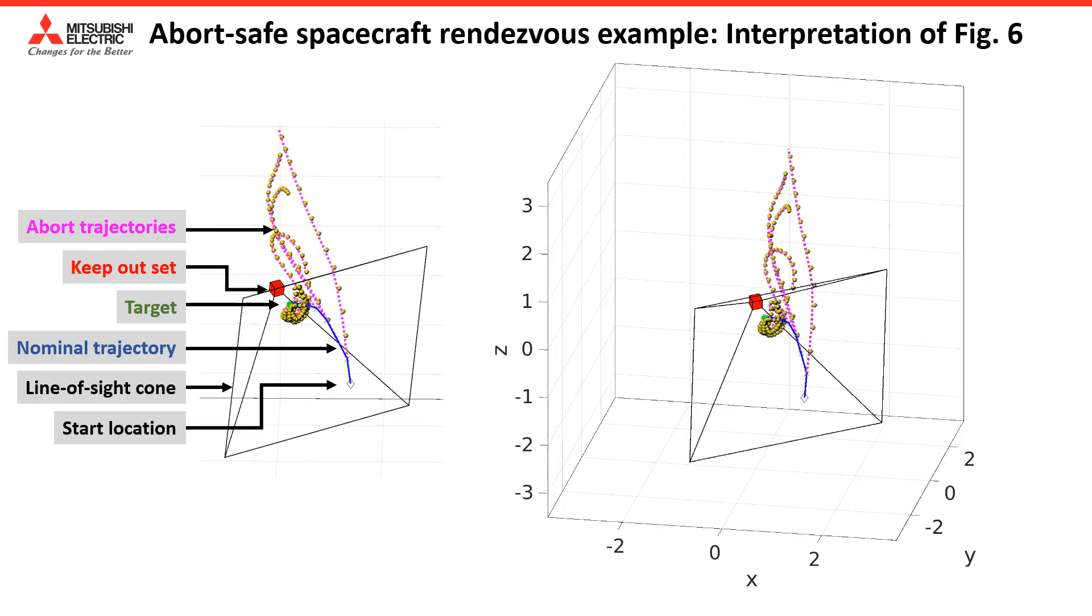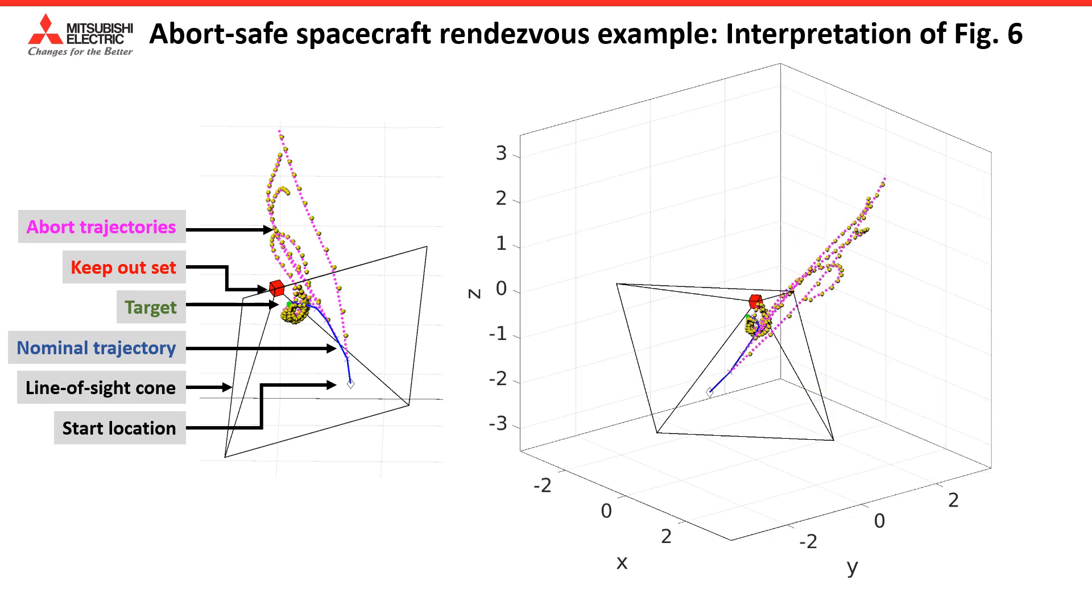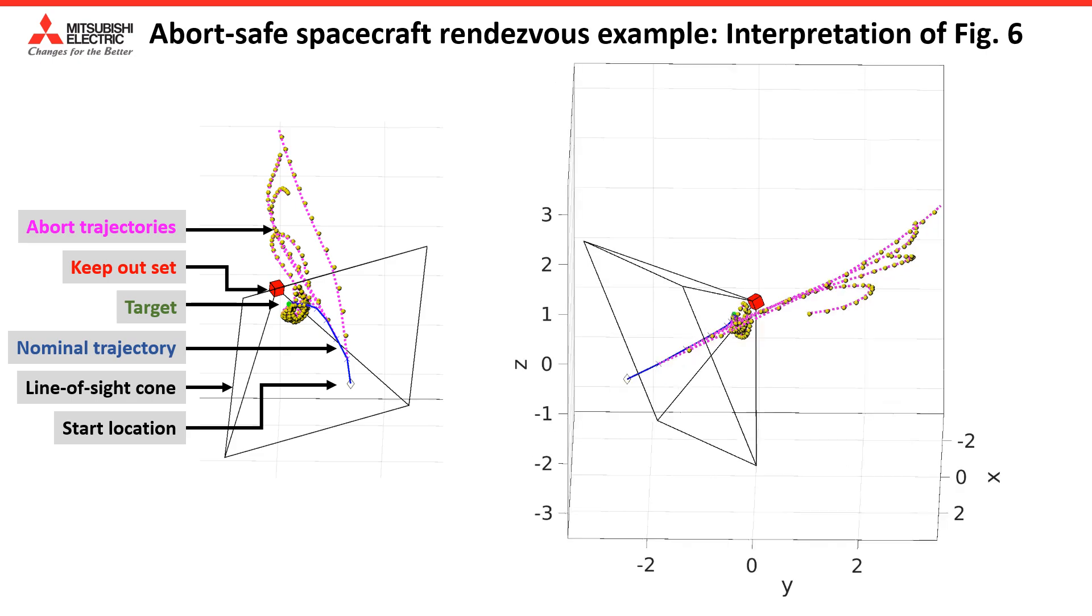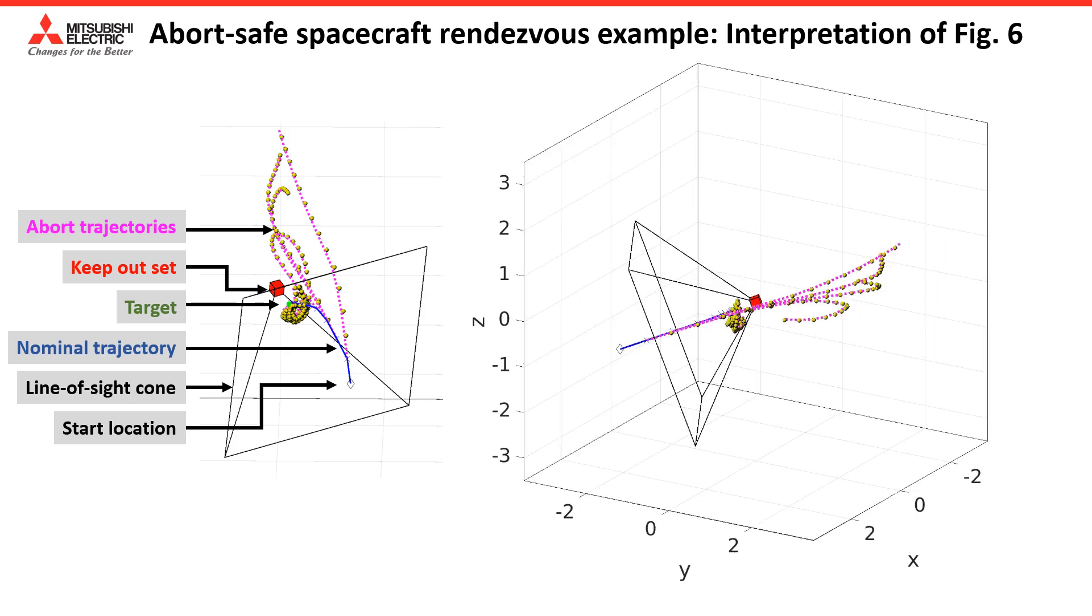As a practical application of the proposed method to compute robust controllable sets, we considered an abort-safe spacecraft rendezvous example.